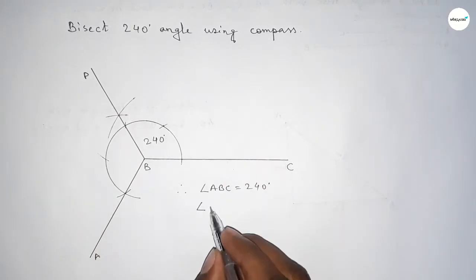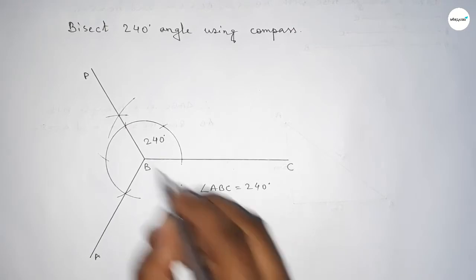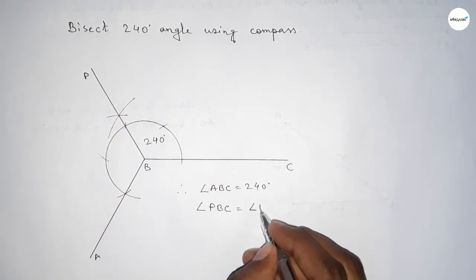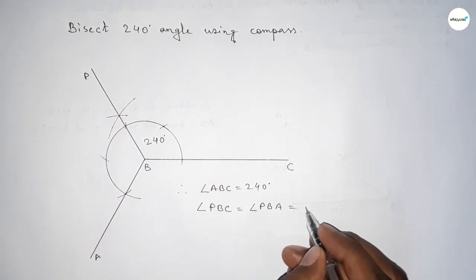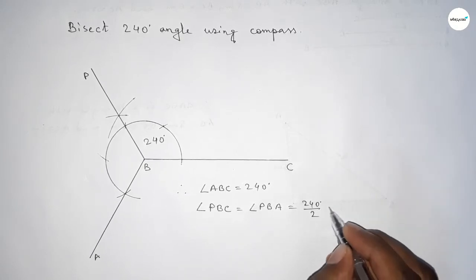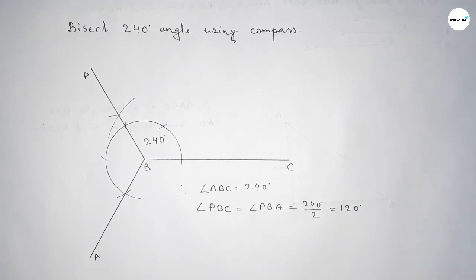And angle PBC equals 240 divided by 2, which equals 120 degrees. That's all. Thanks for watching. If this video is helpful to you, please share it with your friends.